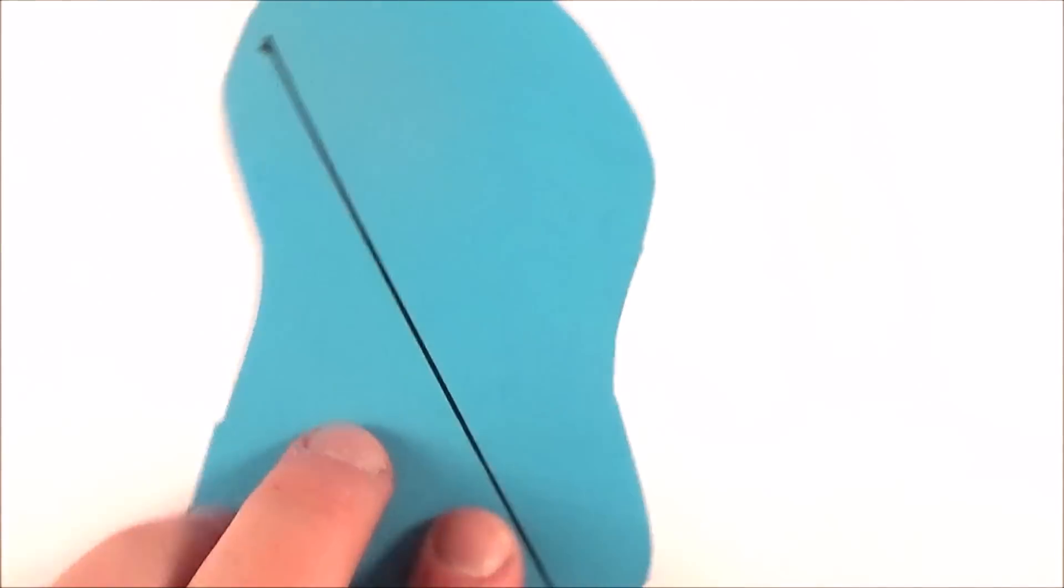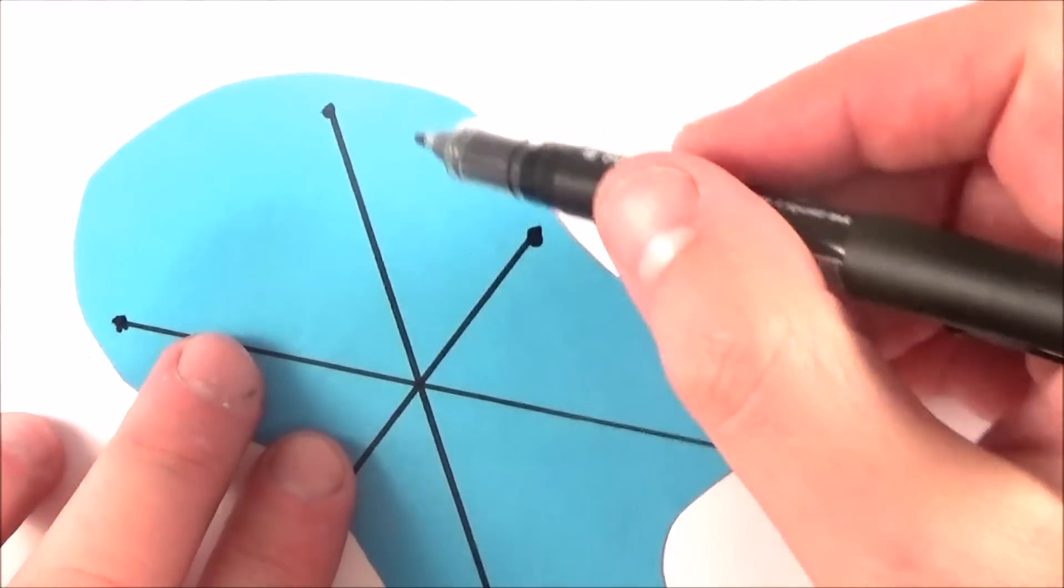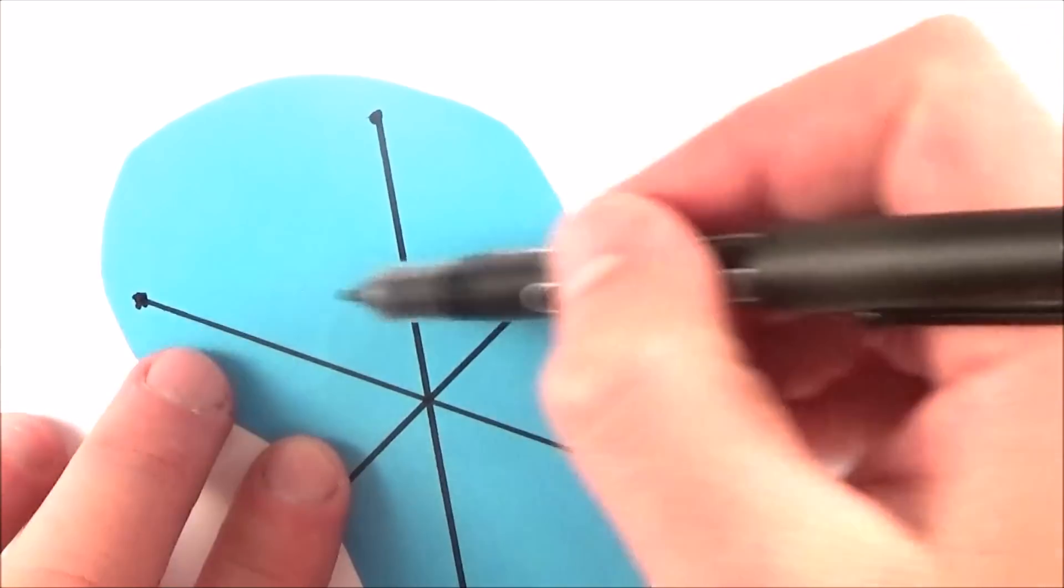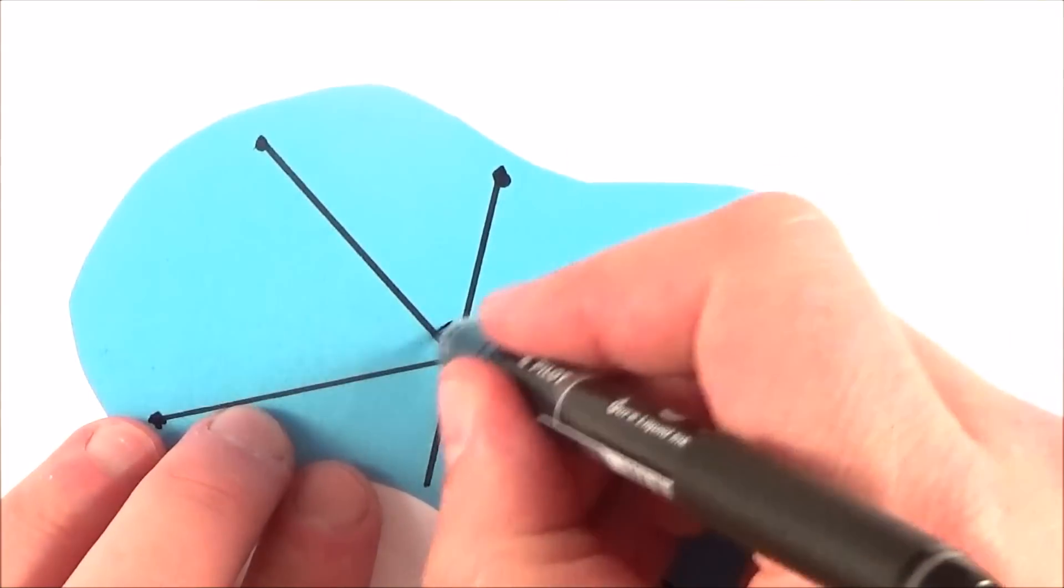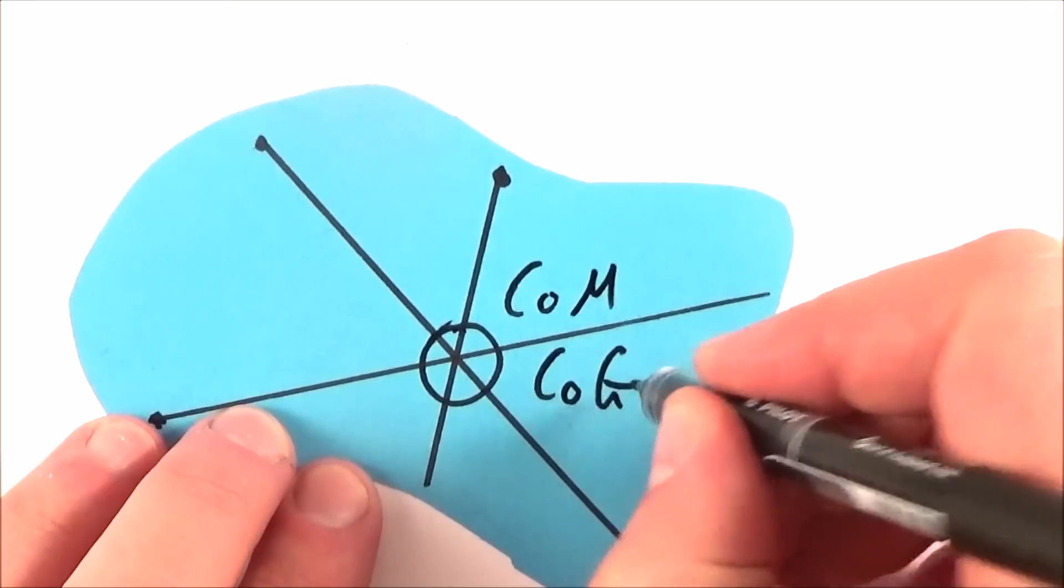If you repeat this at many other points, eventually you end up with the centre of mass must be down this line and this line, and if you do it from three points then where they all cross over is the centre of mass or the centre of gravity.